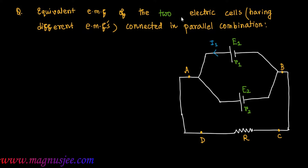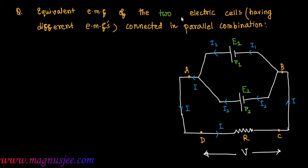Current I1 is generated from the cell of EMF E1, and current I2 comes from the cell of EMF E2. The two electric cells have different EMFs E1 and E2. I1 and I2 are the currents generated from the two cells, and I is the total current flowing from left to right through external resistance R. V is the potential difference across the external resistance R and also the terminal voltage of both cells.